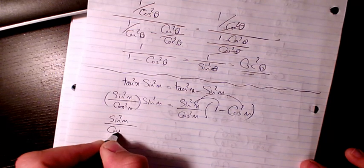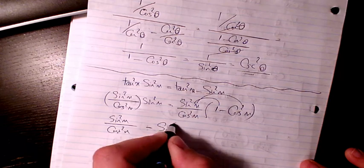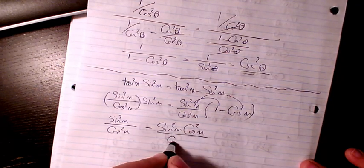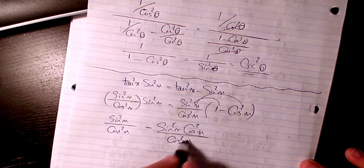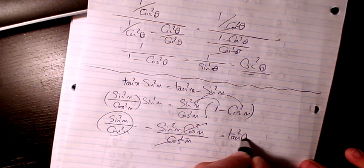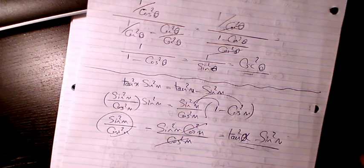Because these two can cancel out, it would be like that. These two cancel out, so I will have tan squared theta or x minus sin squared x. That's proven.